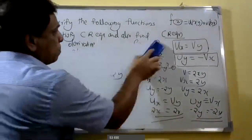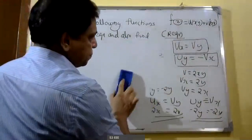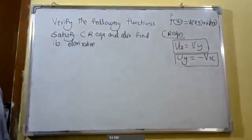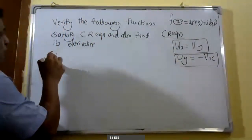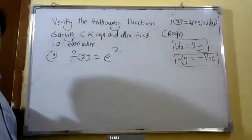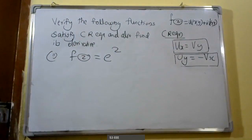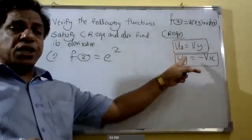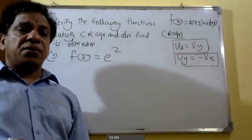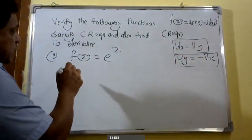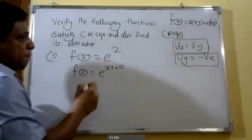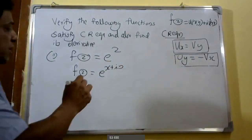We can do one more problem. That is the second problem: f of z is equal to e raised to z. We have to show that e raised to z satisfies the Cauchy-Riemann equations and find its derivative. For that, f of z equals e raised to x plus i y, taking z as x plus i y.